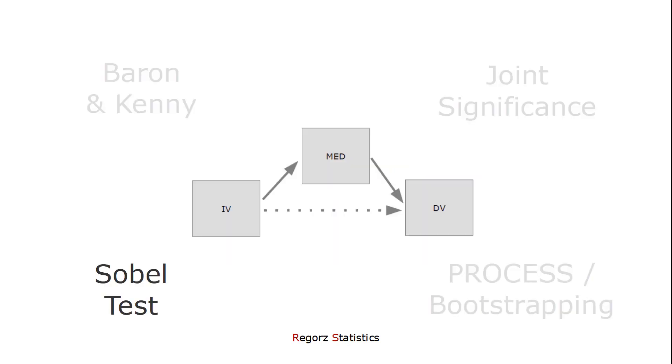Then there is the Sobel test. The Sobel test makes an assumption about the distribution of the indirect effect, that is the effect a times b. Unfortunately this test is not implemented in G*Power, so for the Sobel test you would have to use the results of simulation analysis, like the one by Fritz and MacKinnon.